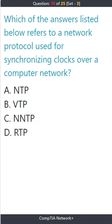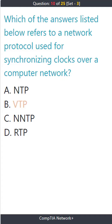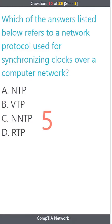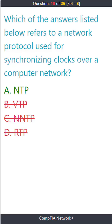Question 10. Which of the answers listed below refers to a network protocol used for synchronizing clocks over a computer network? A. NTP. B. VTP. C. NNTP. D. RTP. The correct answer is A. NTP.